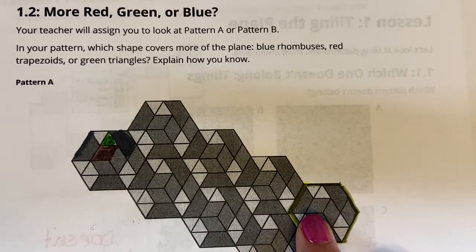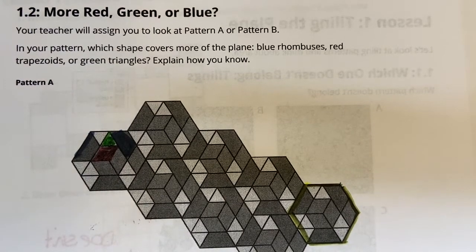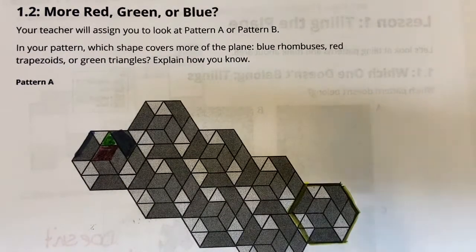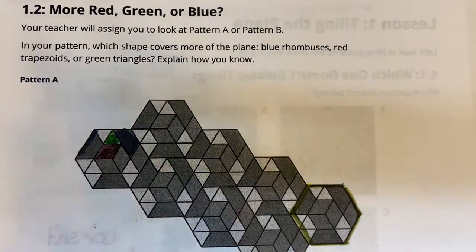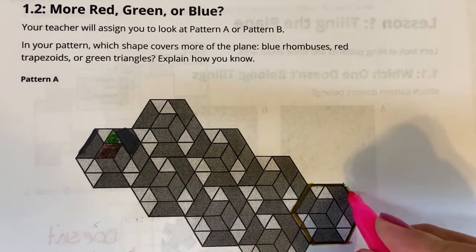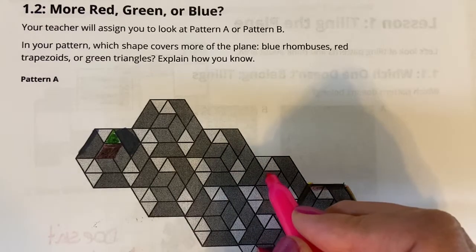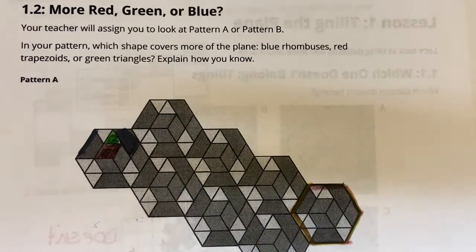See how the rhombuses have all sides the same, and the trapezoid has a pair of parallel sides. I tried to color them but it didn't show up great. If I want to know which shape takes up the most area, what I noticed is that I can look at just one hexagon — I can split the pattern into identical hexagons. They're all identical to each other, so I'm just going to analyze one of these.